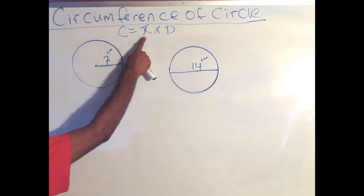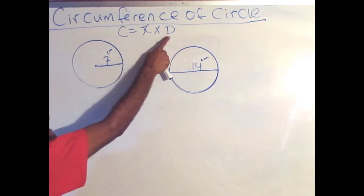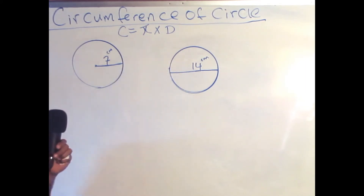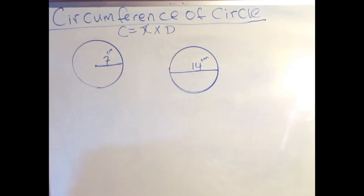Circumference equals pi times d, which is the diameter of the circle. And if we would look back when it comes to a circle, what is the diameter?